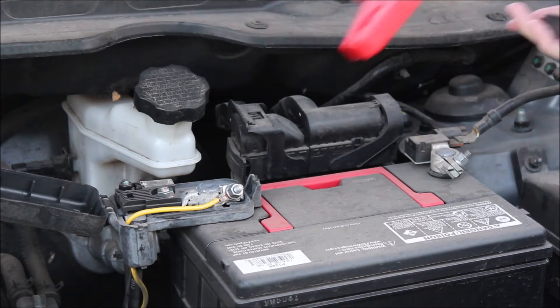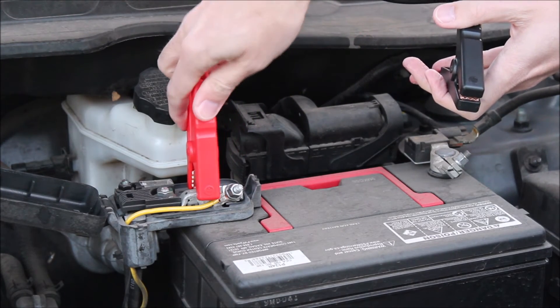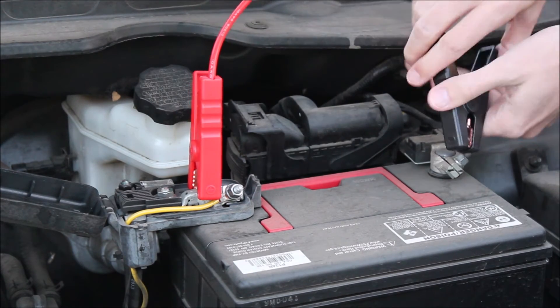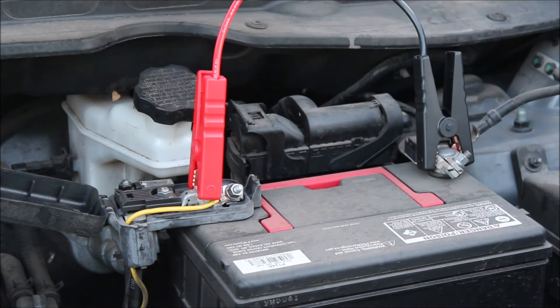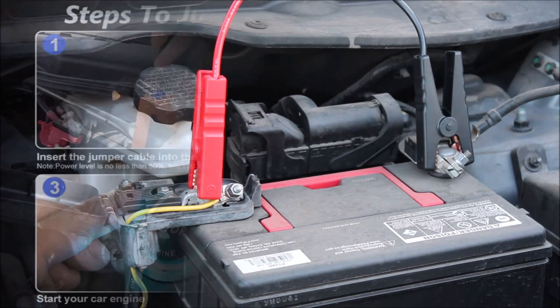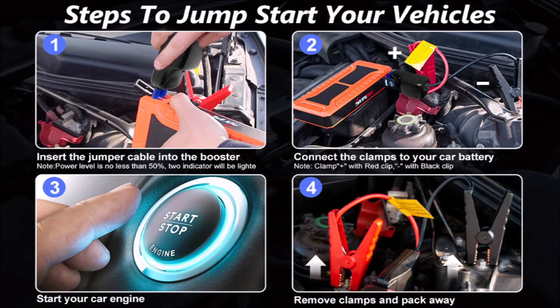Jumpstarting your vehicle is pretty easy. First you connect the red clamp to the positive post on the battery and the black clamp to the negative post on the battery. Then you connect the jumpstart cable to the jump starter, start the vehicle, and immediately remove the battery clamps from the battery once the vehicle has started.